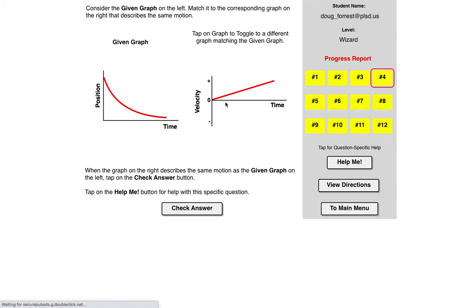So this one does show an increase in velocity, but it shows it increasing starting from zero and getting larger. So that would be a graph where the position graph would look like this, curving upwards.